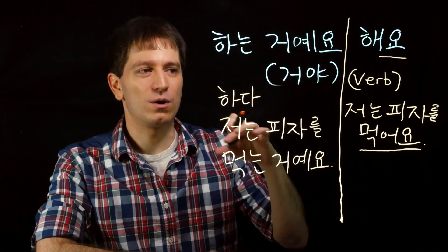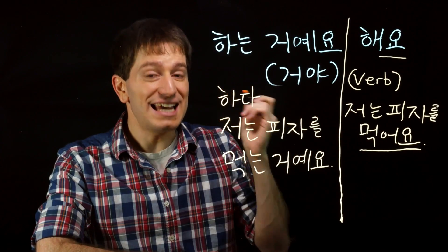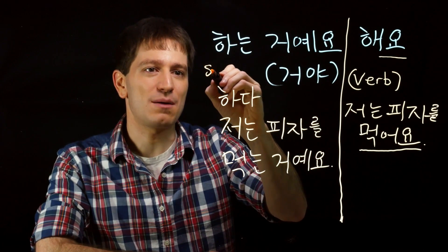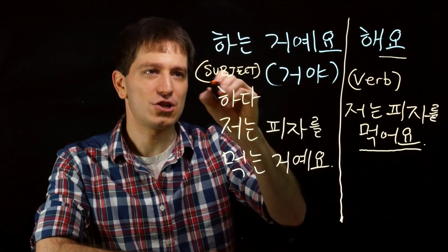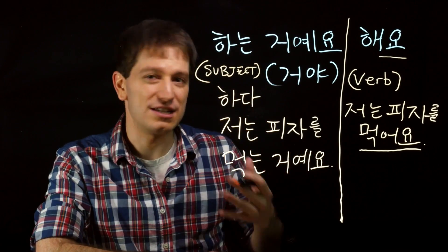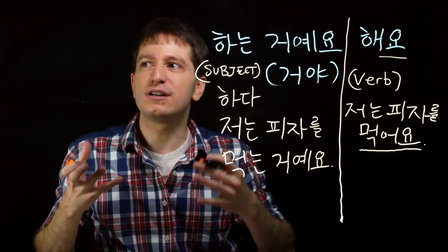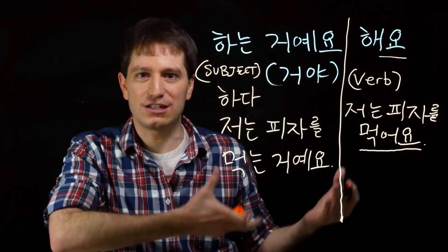는 거예요, or 는 거야, or any variation on that, however, slightly emphasizes the subject of that verb. So in this case, the subject of the verb is whoever or whatever is doing that verb, if it's an action verb, or if it's a descriptive verb, whatever it is that's being described by that descriptive verb.